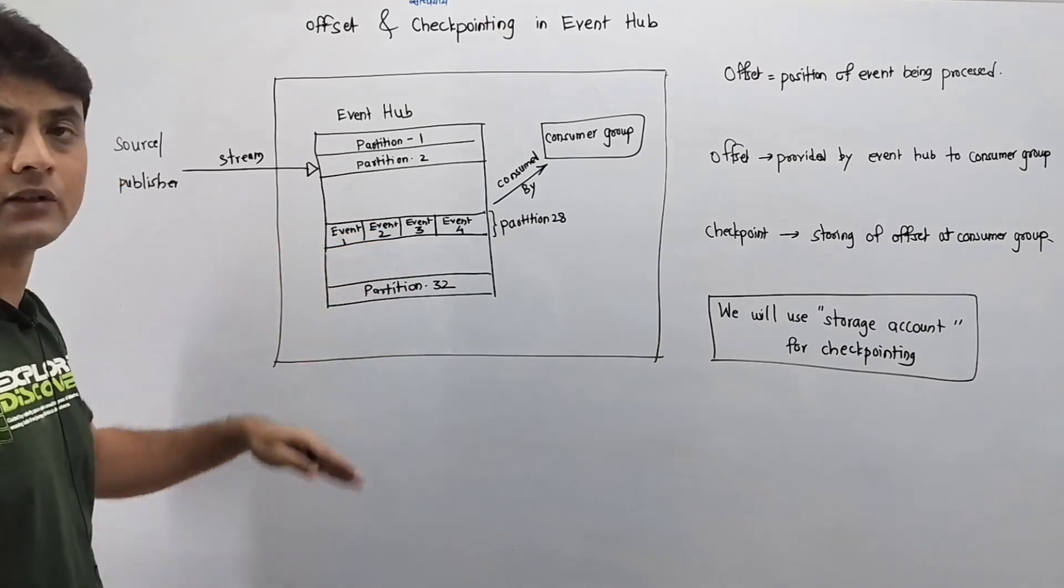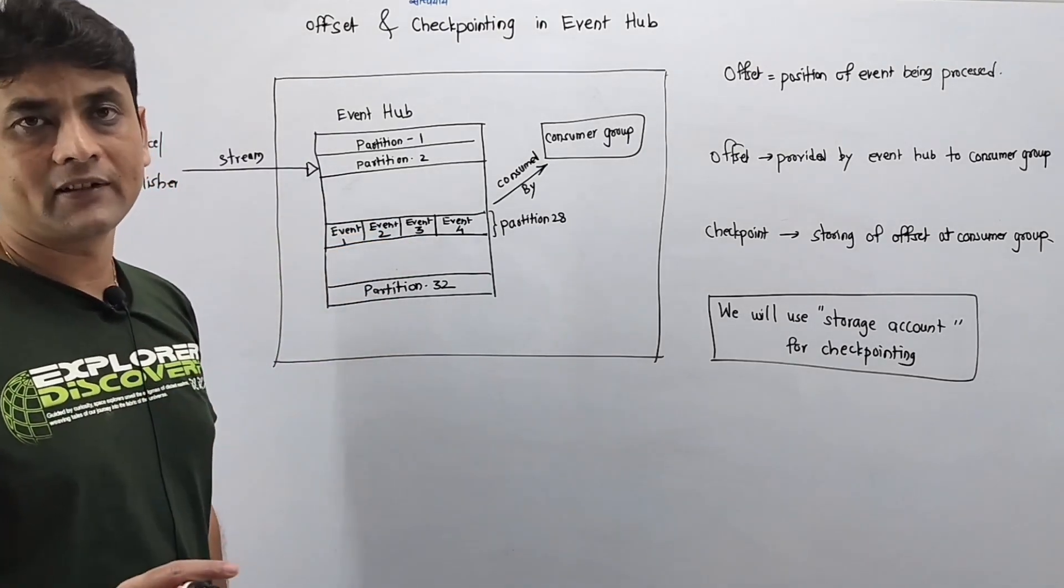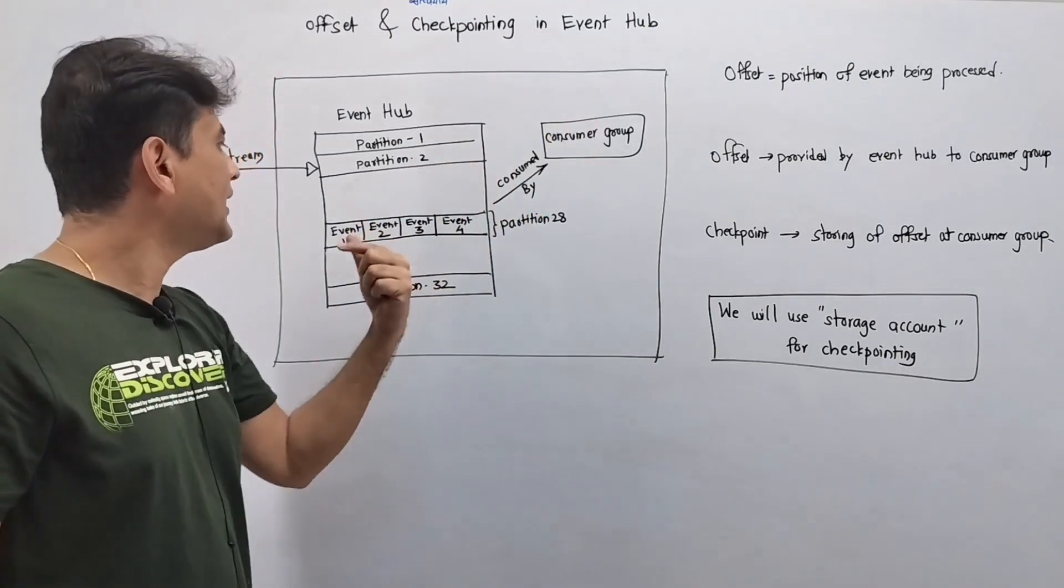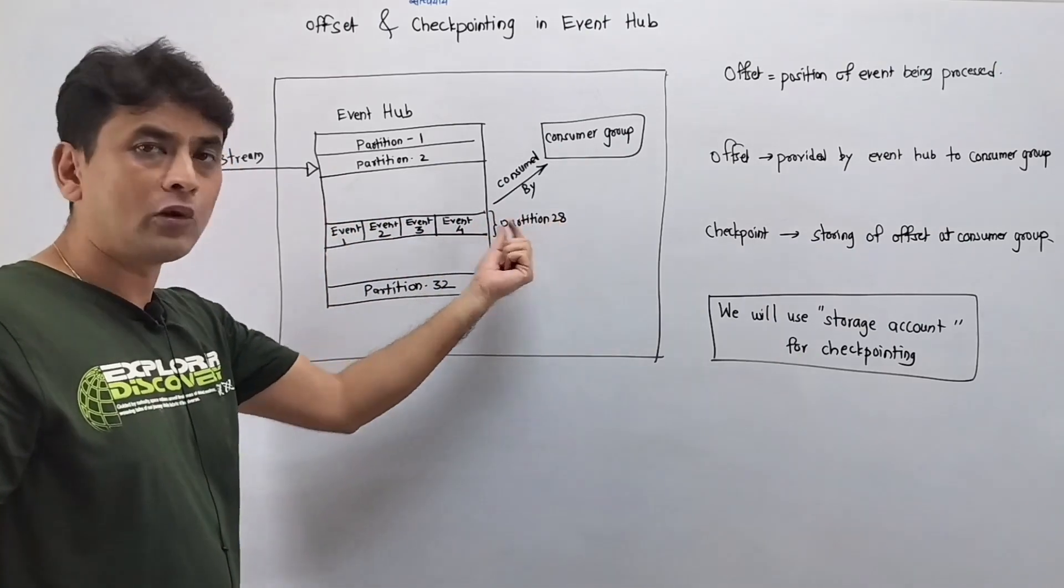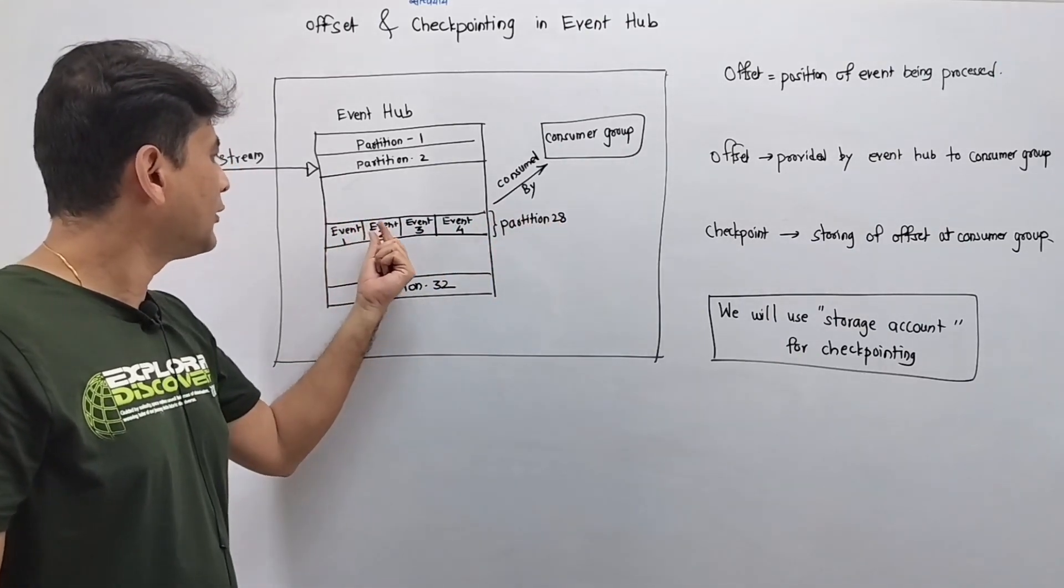Now imagine this consumer group is consuming events from partition number 28, and assume there are four events: event one, event two, three, and four in this partition number 28.